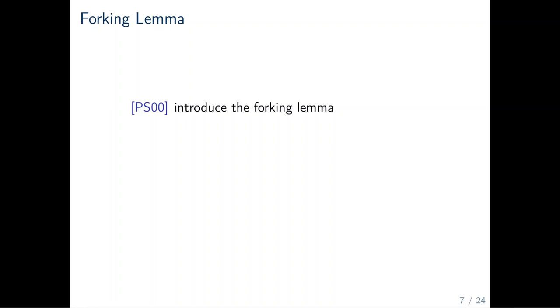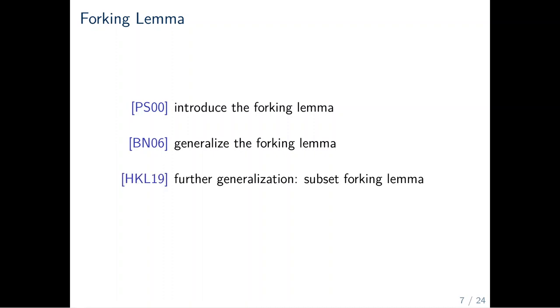In 2000, Pointcheval and Stern introduced forking proofs for signatures and blind signatures. In 2006, Bellare and Neven give a generalization. Their version only estimates the probability of both runs being successful. In the context of blind signatures, this is on its own not sufficient. For three-move blind signatures, an additional argument on the distributions of the outputs is needed. In 2019, Hauck, Kiltz and Loss give a further generalization which also allows to argue on the distributions of the outputs.